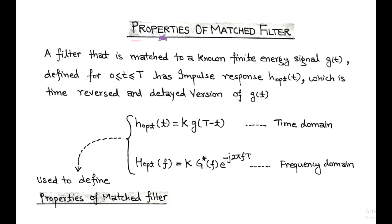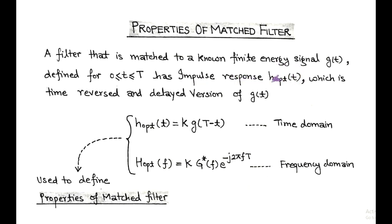Hello friends, our next topic is properties of matched filter. In our last video lecture, we talked about the optimum matched filter that is used to detect the baseband transmitted signal at the receiver side. Matched filter is basically a linear time invariant (LTI) filter that is matched to a known finite energy signal g(t), defined within the interval 0 ≤ t ≤ T. It has an optimum impulse response given by k times g(T - t), which represents the time-reversed and delayed version of input signal g(t).